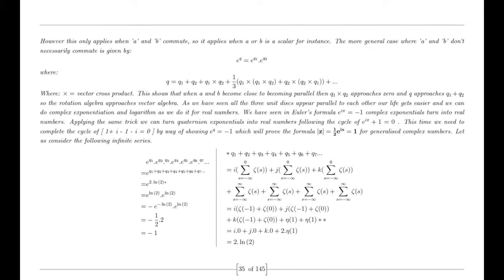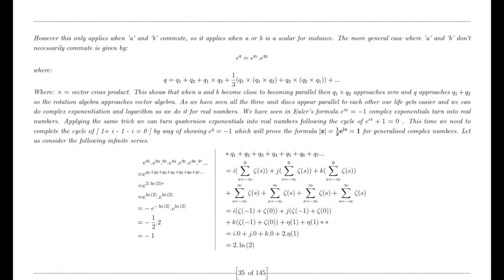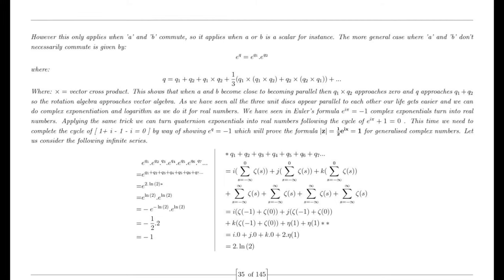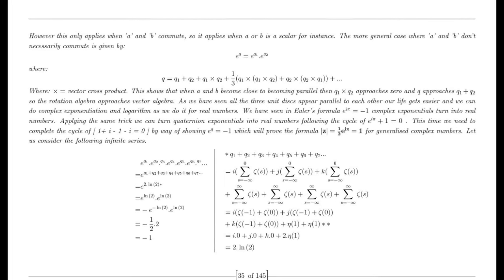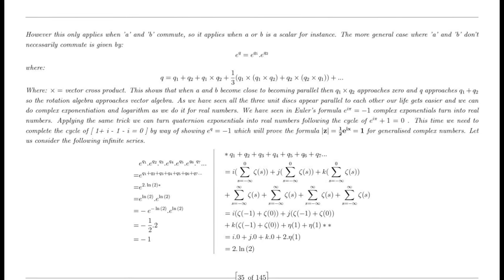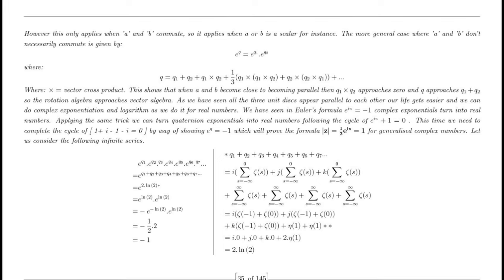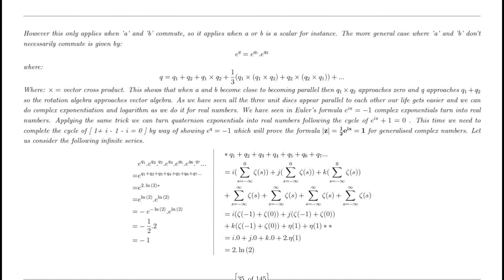Similarly, the Goldbach conjecture, which states that every even integer greater than 2 can be expressed as the sum of two prime numbers, could also be approached using the prime number theorem and the dual nature of numbers. By analyzing the distribution of prime numbers and their properties, we can provide a minimal proof that supports the Goldbach conjecture.